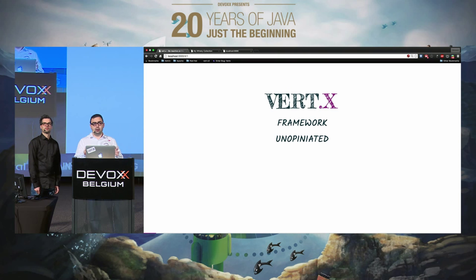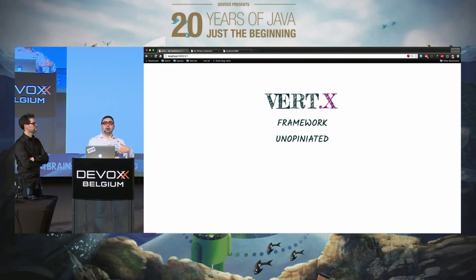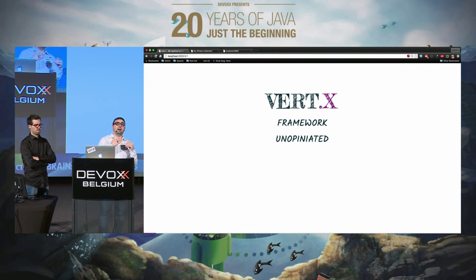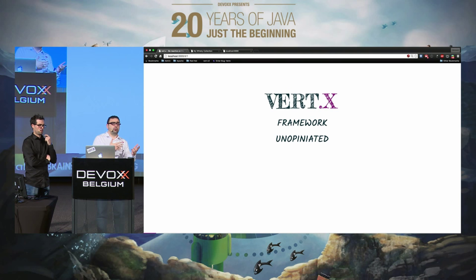You don't want a fat jar? Don't do fat jar. You want a Docker container? Do Docker container. You want to put your sources in a lib folder? You can. There is nothing you can't do. It's completely unopinionated. Sometimes that's really cool because you can adapt Vert.x to your own needs. Sometimes you may be a bit lost about how to organize your source, your tests, and so on.